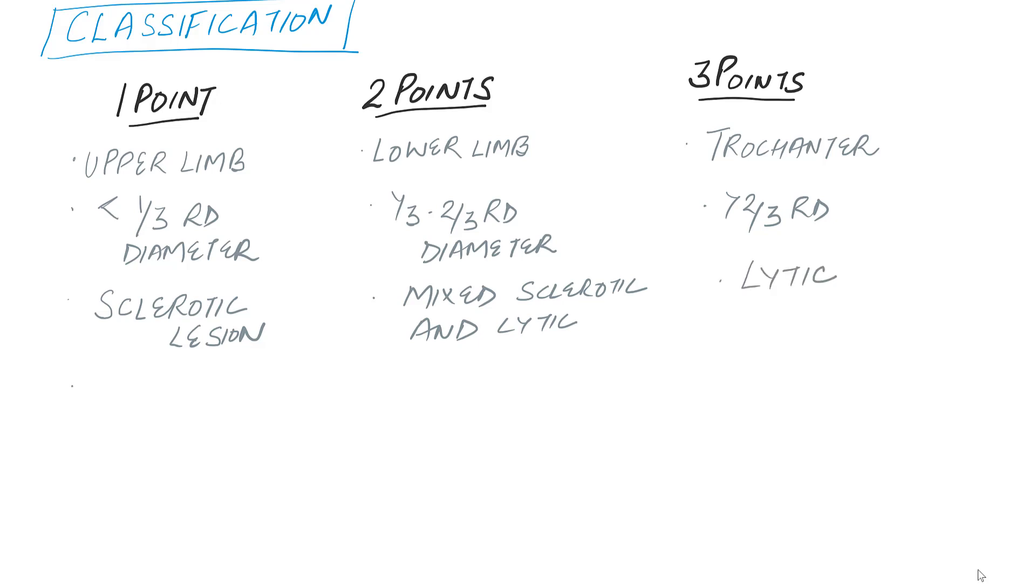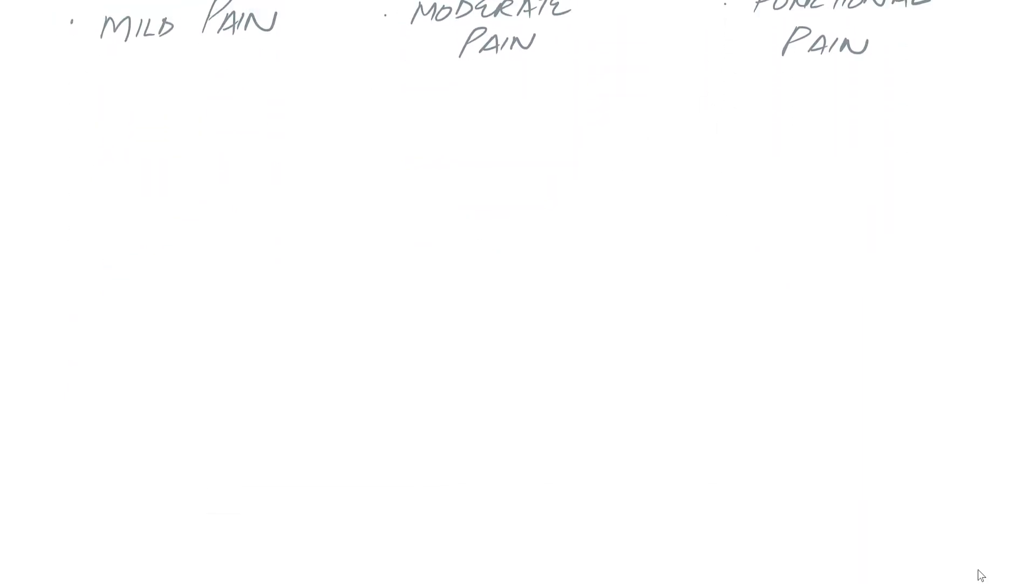The third thing is we look at the lesion itself, whether it's a sclerotic lesion, mixed sclerotic, or a lytic lesion. The final thing we look at is the pain: mild, moderate, and functional pain. The scoring system is as you can see. You can pause the video to have a better look at it. Based upon this scoring system we calculate the total score.